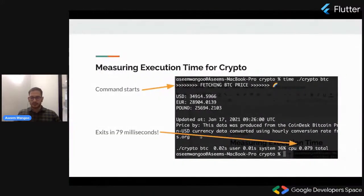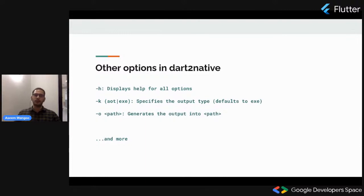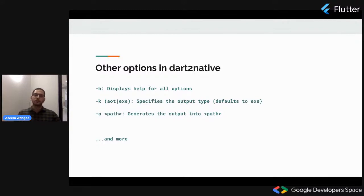The other options available in dart2native are: -h, which is used to display help for all options; -k, which we can use to specify our output type, whether AOT or EXE — it defaults to EXE if -k is not specified; and -o or dash-o, which specifies the output path. If we don't specify the path, it creates the CLI in the directory where it is running. In our case, crypto was generated in the same folder as the entry file.